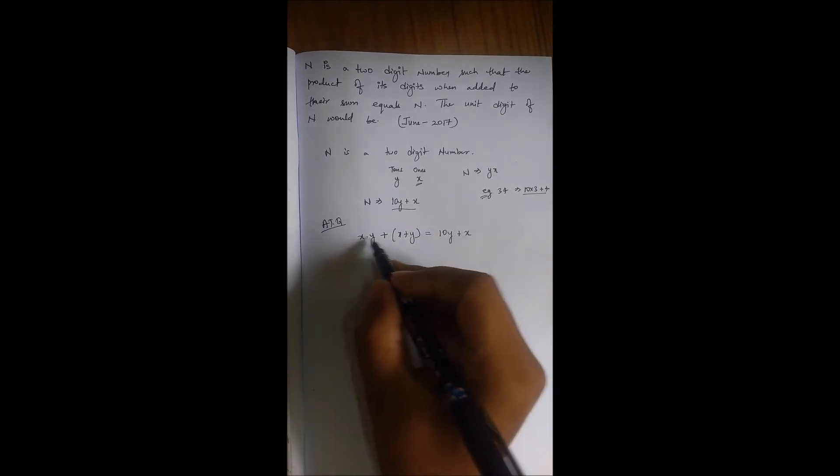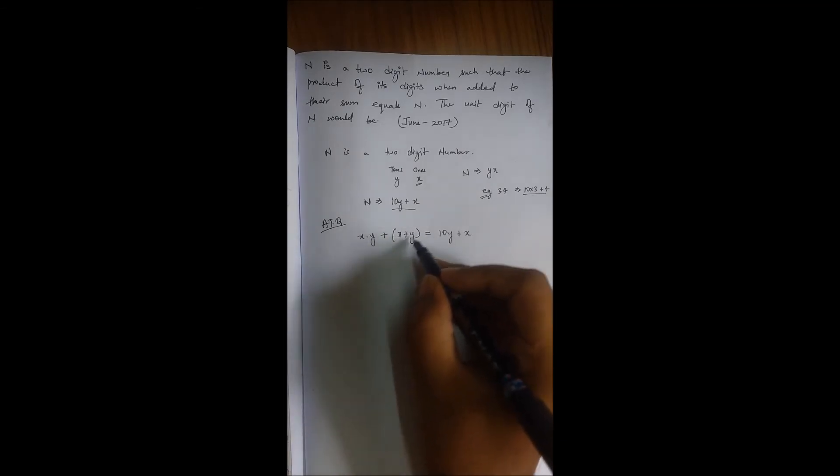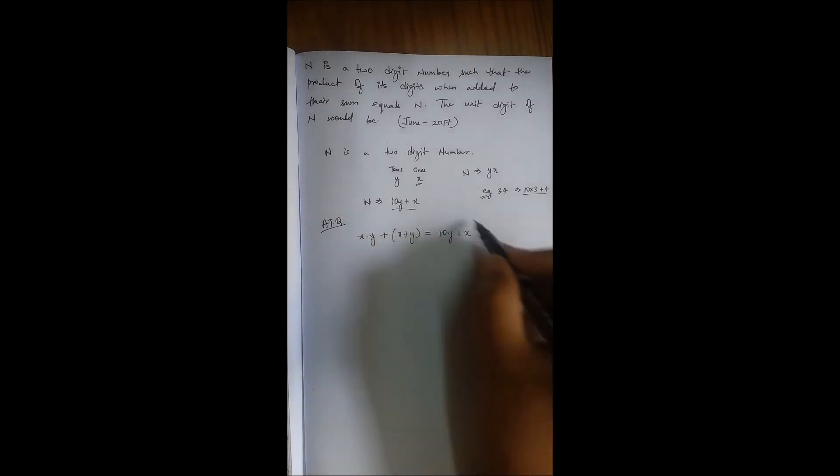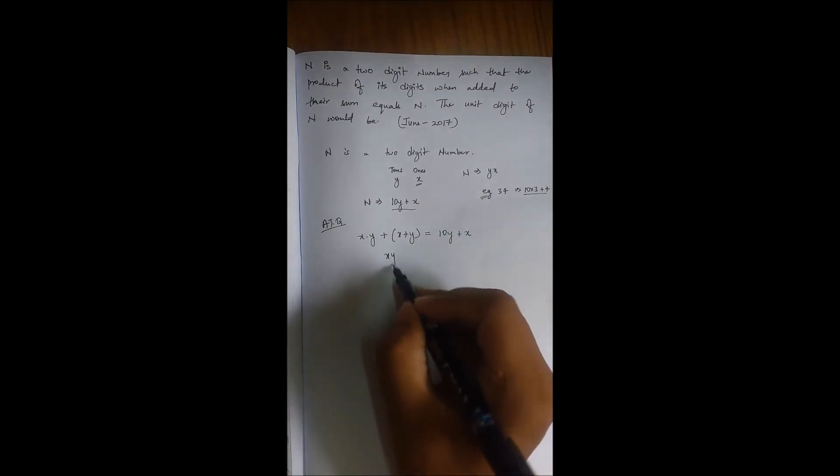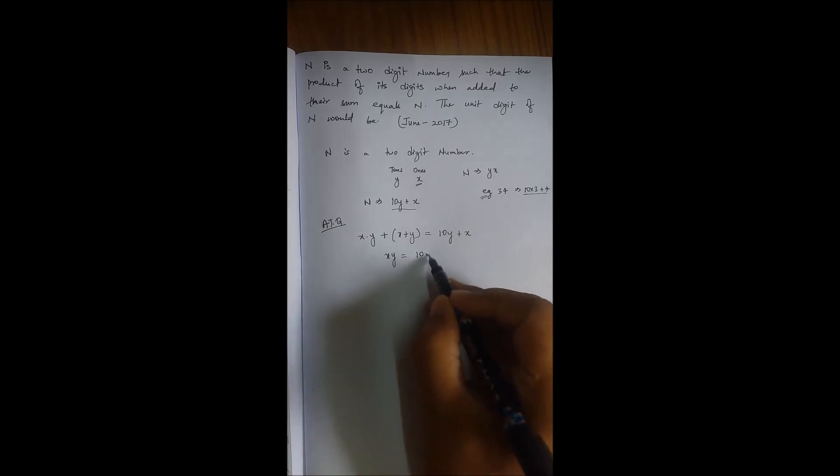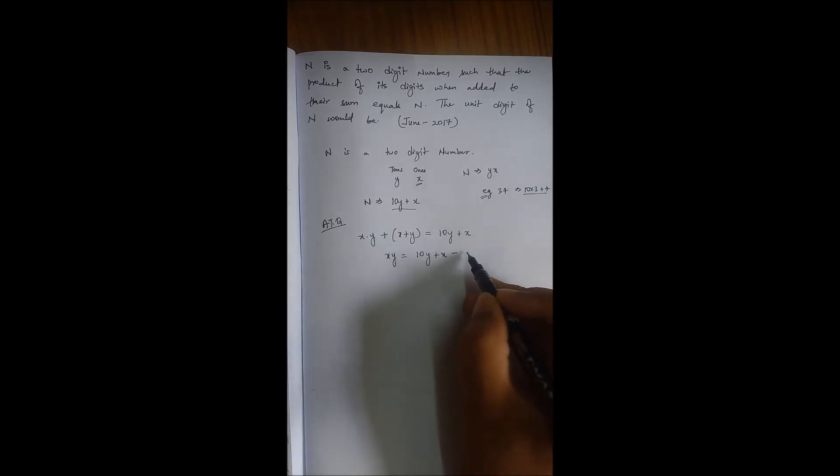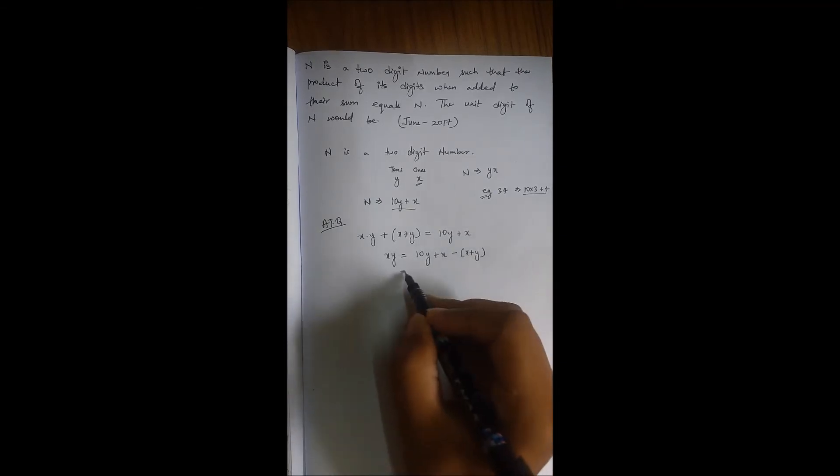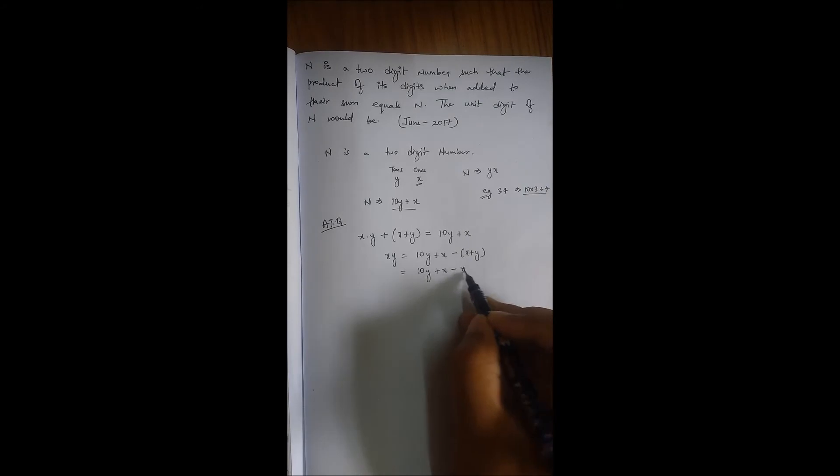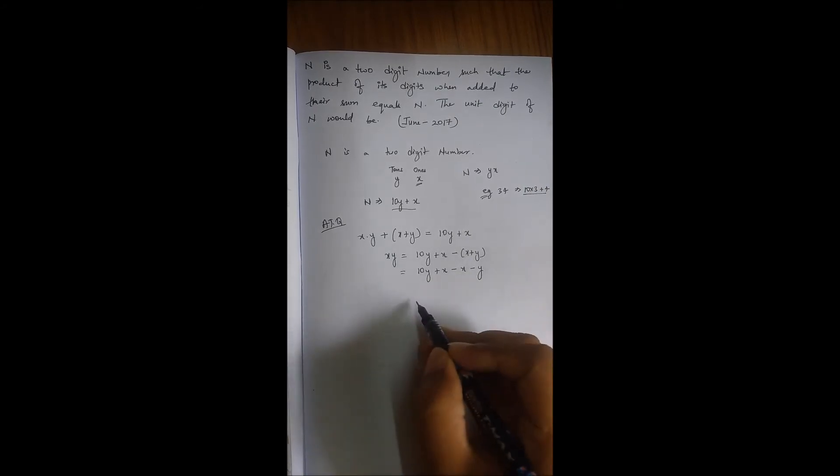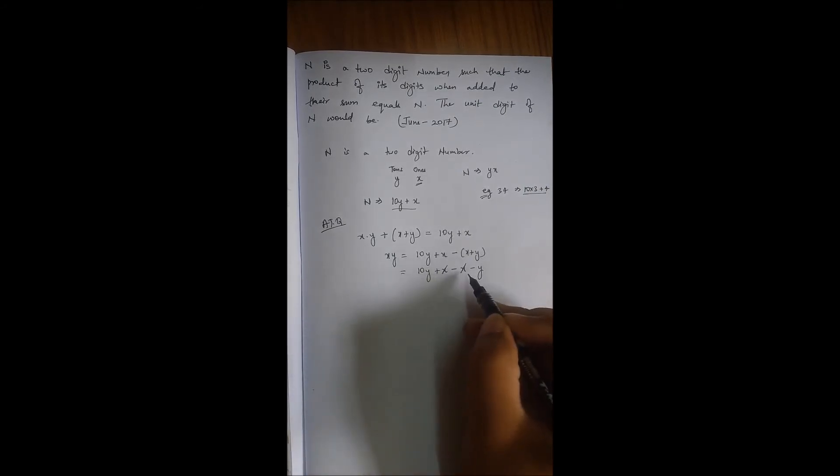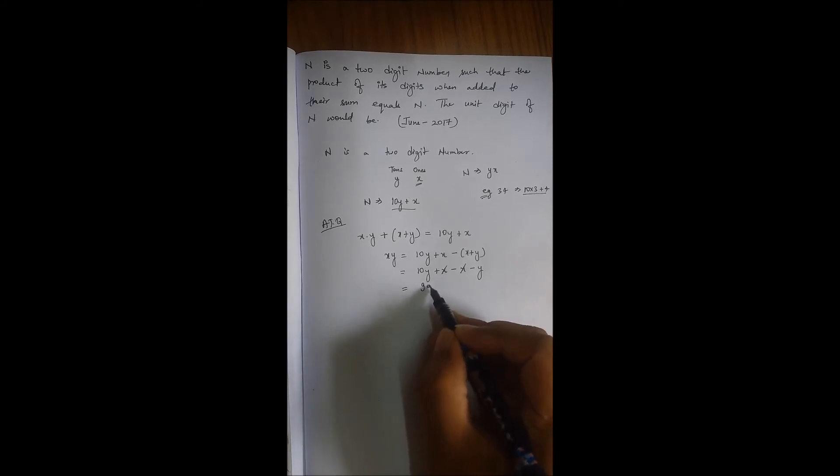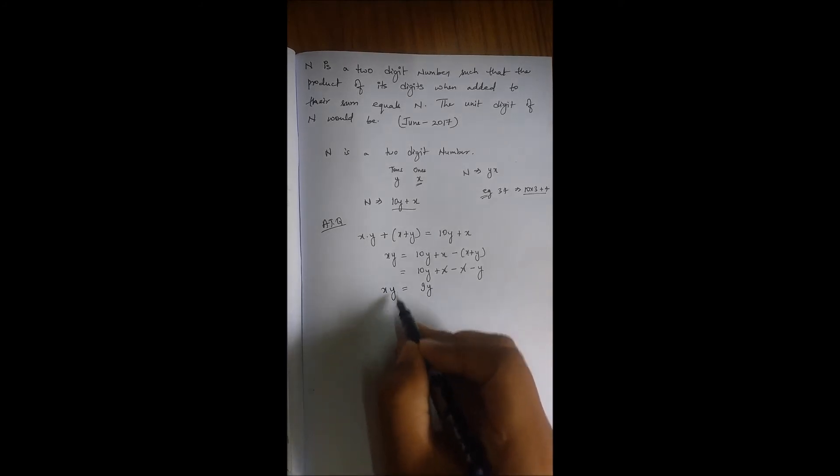So we can take this value to the right-hand side. It will be XY equals 10Y plus X minus X plus Y. If we open the bracket, we will get 10Y plus X minus X minus Y. These X will be cancelled out, and we will get 9Y equals XY.